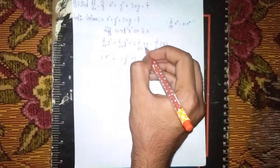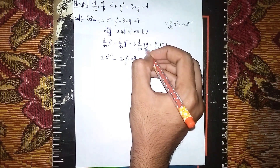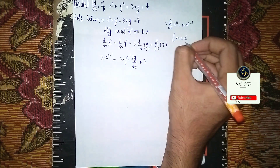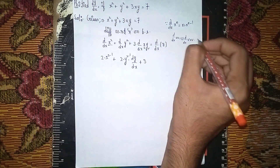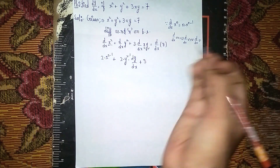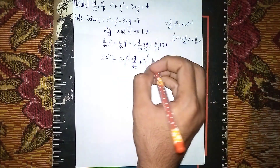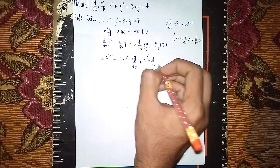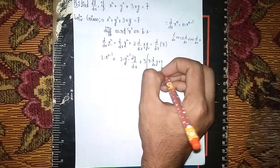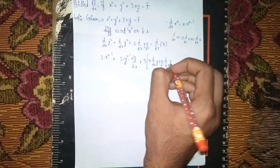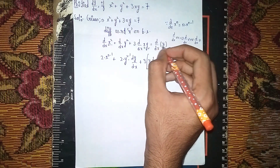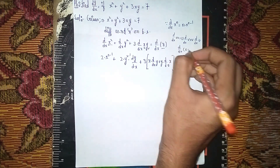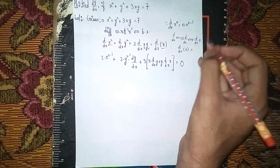Now for 3xy, both terms are multiplying, so I am using the product rule: d/dx of (u·v) = u · d/dx(v) + v · d/dx(u). So 3 times [x · dy/dx of y + y · dy/dx of x] = 0, since d/dx of any constant is 0.